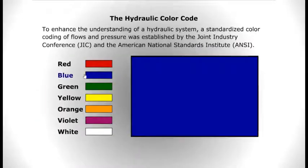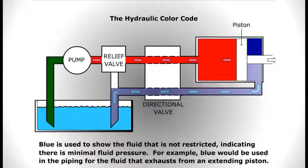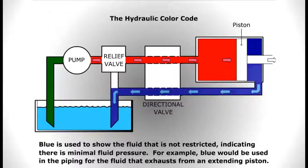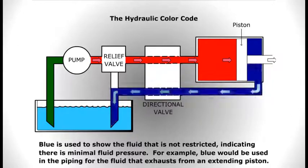Blue is used to show the fluid that is not restricted, indicating there is minimal fluid pressure. For example, blue would be used in the piping for the fluid that exhausts from an extended piston.